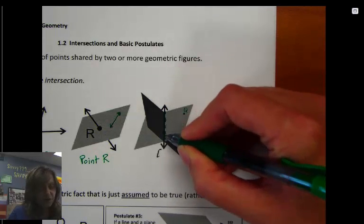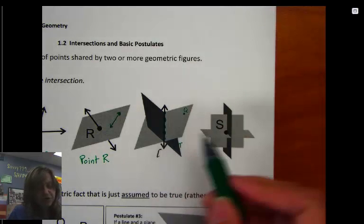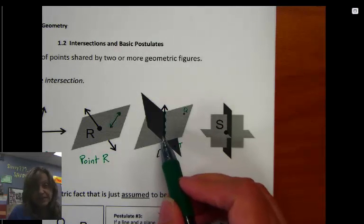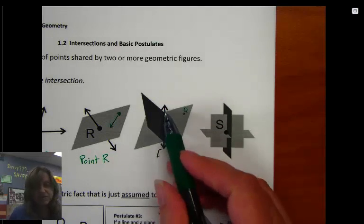Those are all along both the light plane and the dark plane. It shares all the points along that line.